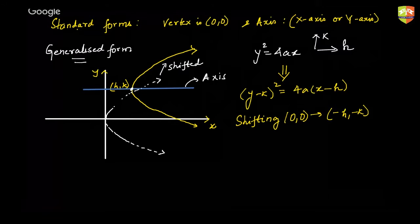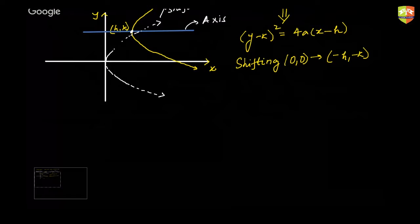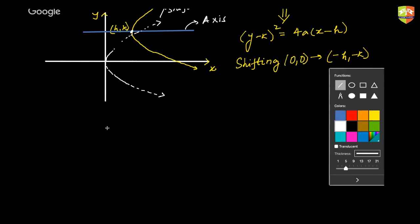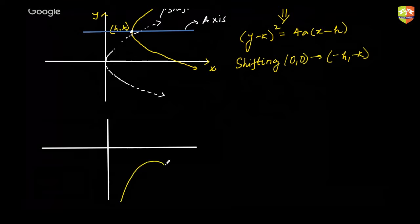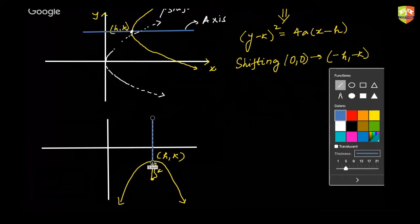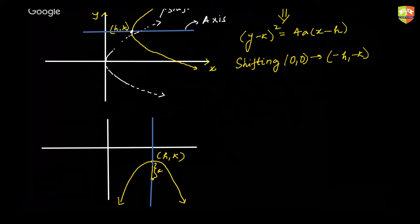In a similar way, all other equations will also change as per the orientation of the standard parabola being generalized and where you are shifting the vertex. So I will take just one more case. If I have drawn a parabola opening downwards where this distance is still a and the vertex is now at (h, k), the equation of the parabola in that case would become (x - h)² = -4a(y - k).